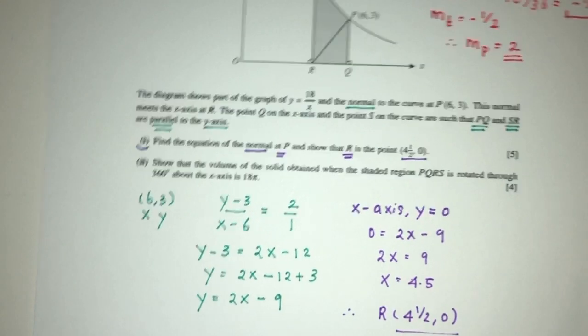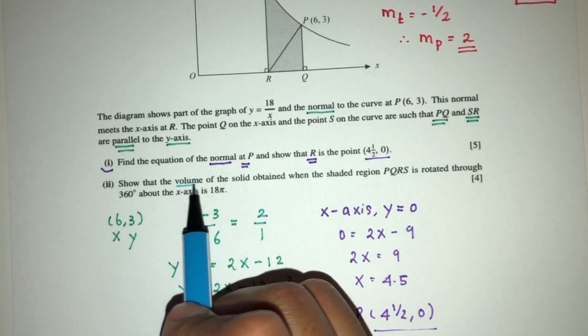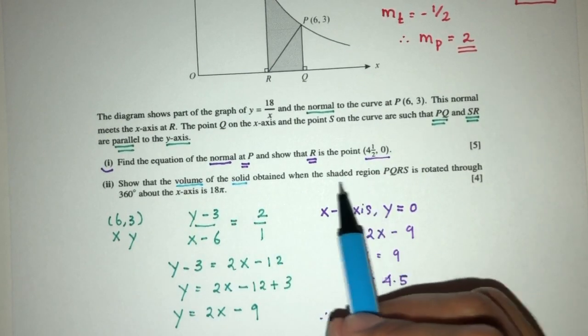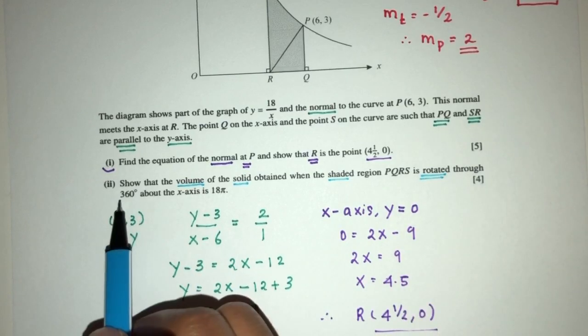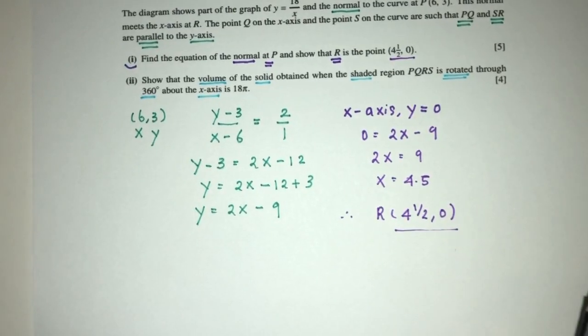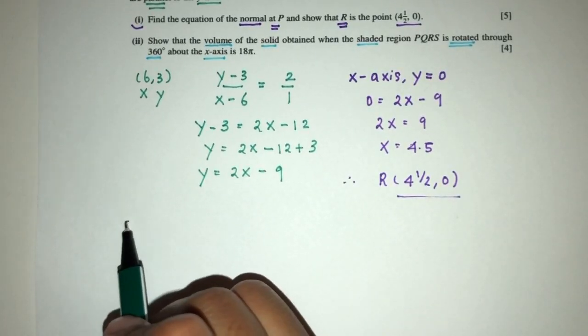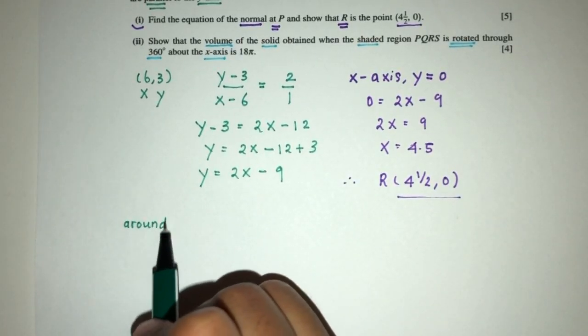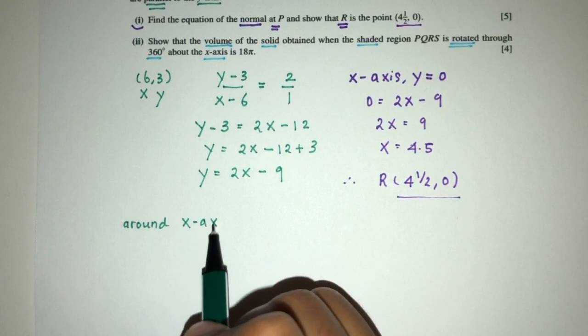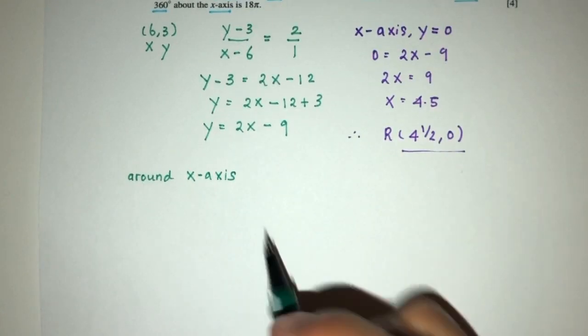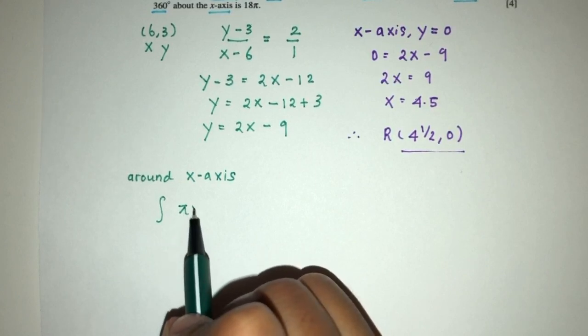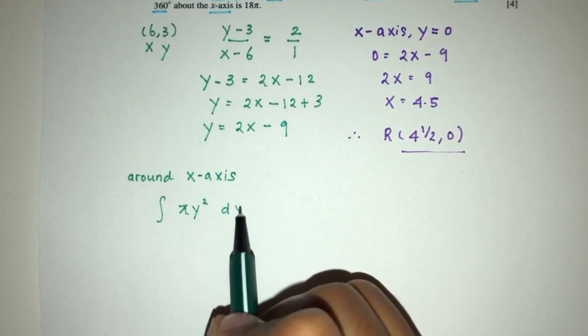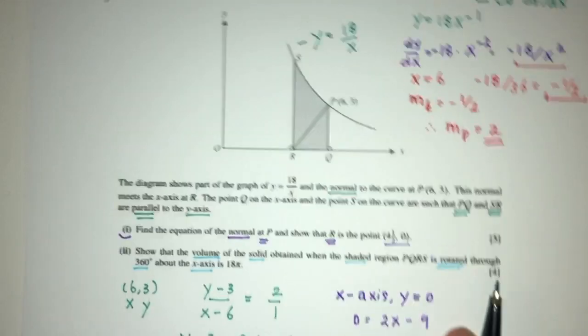Now let's move on to part 2. We have to show the volume of the solid obtained when the region is rotated through 360 degrees about the x-axis. When you rotate around the x-axis, we use this formula, which is the integration pi y squared with respect to x.